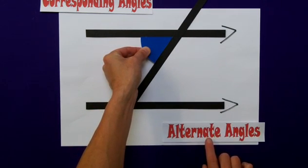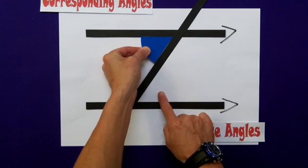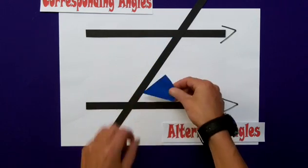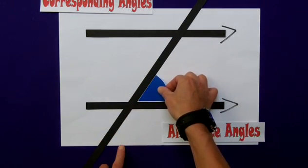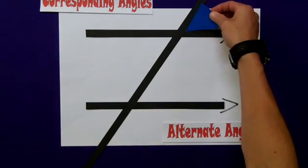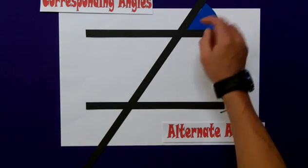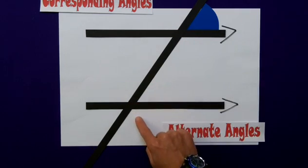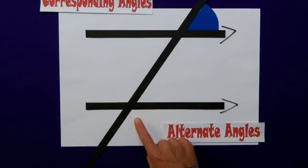And also, alternate angles will be the same, in that this angle is alternate to this one. So, in actual fact, the end result is that all four of these angles will be the same, as is one, two, three, four angles here will be the same. Hope that helps.